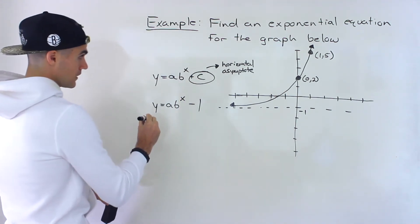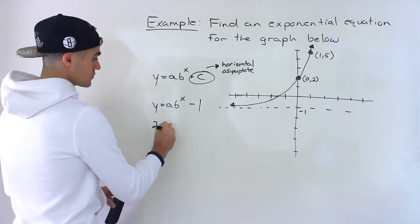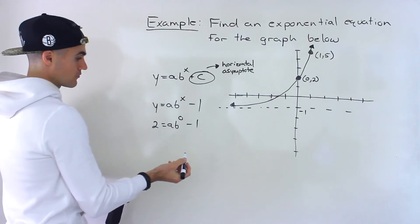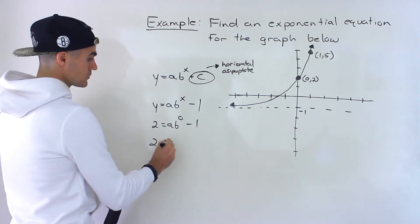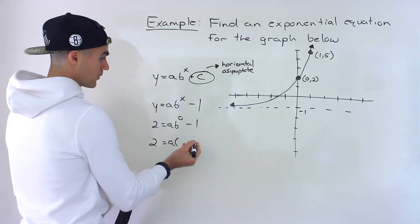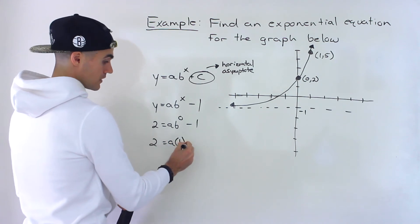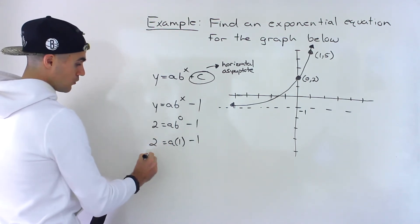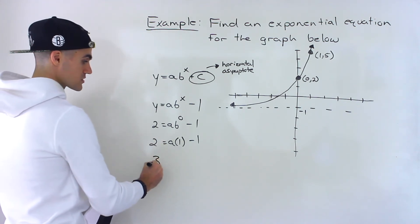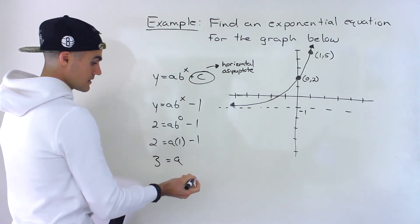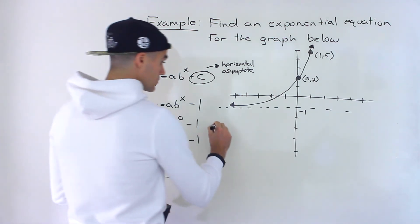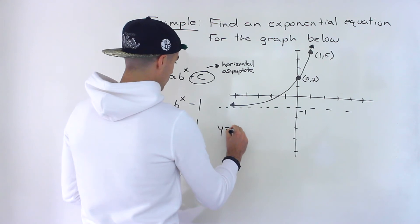So starting with the (0, 2), notice that the y value is 2 and then the x value is 0, and we have the minus 1. So we'd have 2 equals a times b to the power of 0 minus 1. Now what's b to the power of 0? That's just 1. We can bring the minus 1 over: 2 plus 1 would give us 3. a times 1 is just a. And so notice that we get the a value. So the a value is 3.